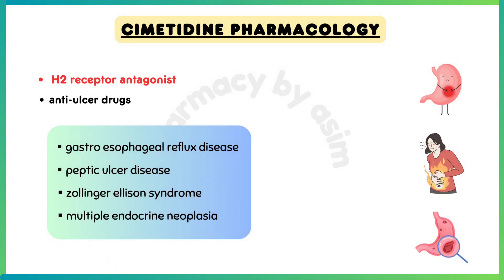Cimetidine is an H2 receptor antagonist drug used for conditions like ulcers, gastroesophageal reflux disease, and hyper-secretory conditions such as Zollinger-Ellison syndrome.